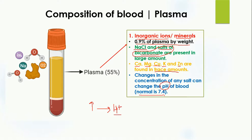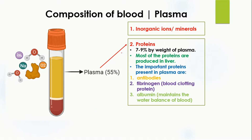The second component of plasma is proteins. About 7 to 9% by weight of plasma is proteins, most of which are produced in the liver and sent into the blood. Important plasma proteins include antibodies, which protect the body from pathogens and harmful substances; fibrinogen, the blood clotting protein that causes blood to clot at a wound; and albumin, which maintains the water balance of the blood.